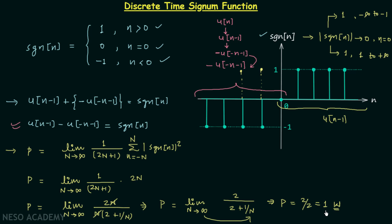So the average power of the signum function is 1 watt. Since the average power obtained is a finite value, this implies that the discrete time signum function is a power signal.